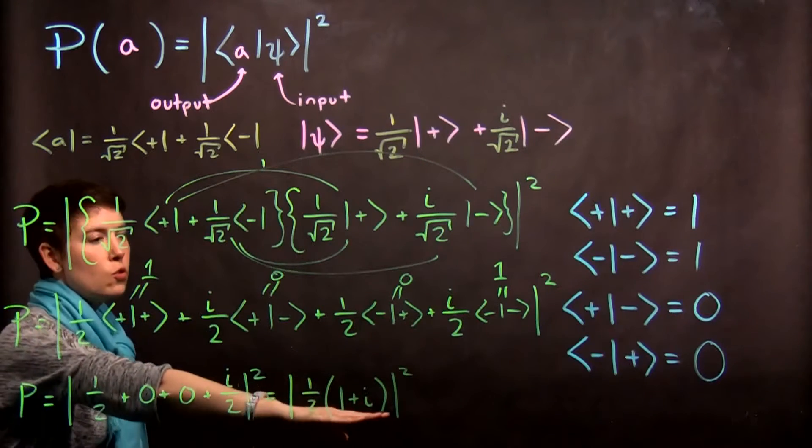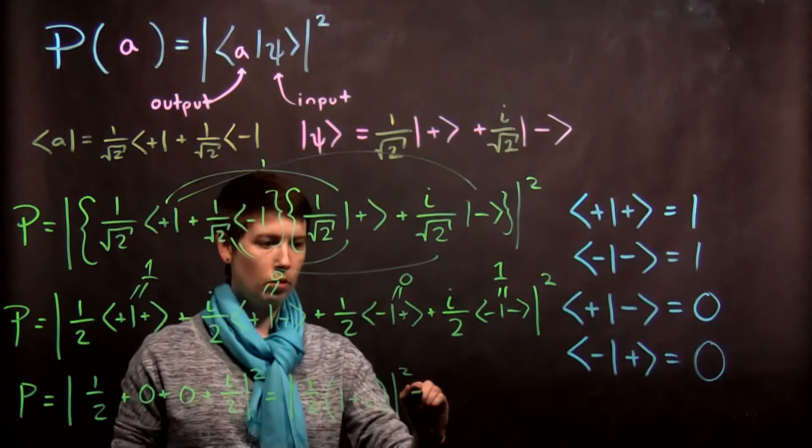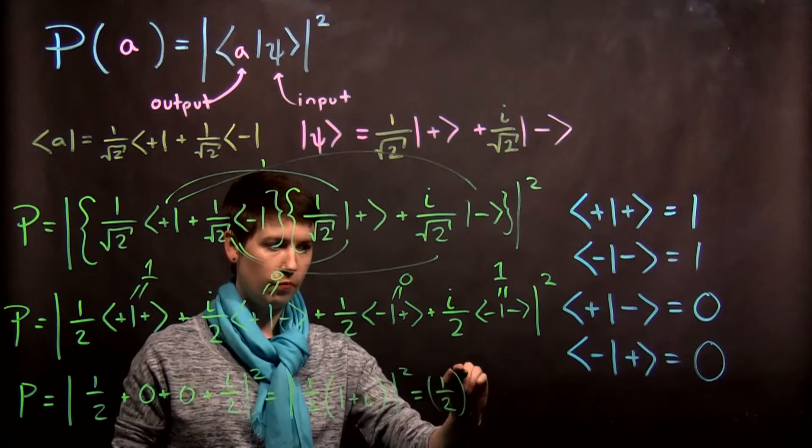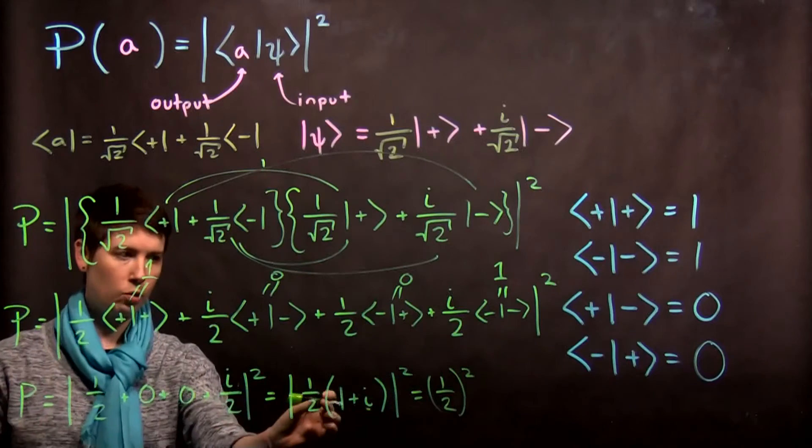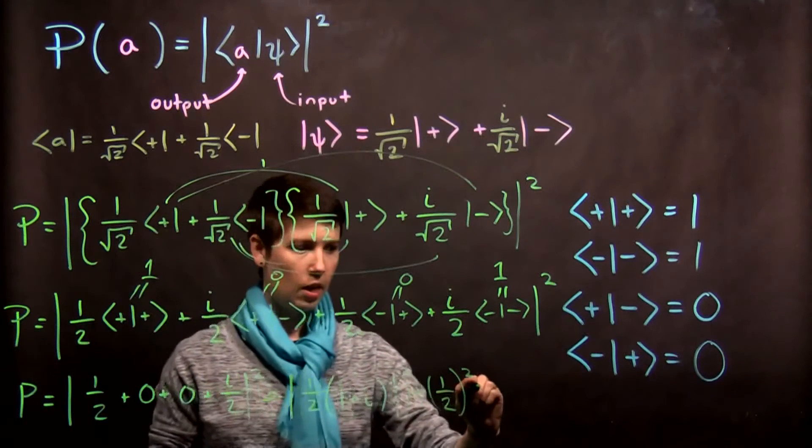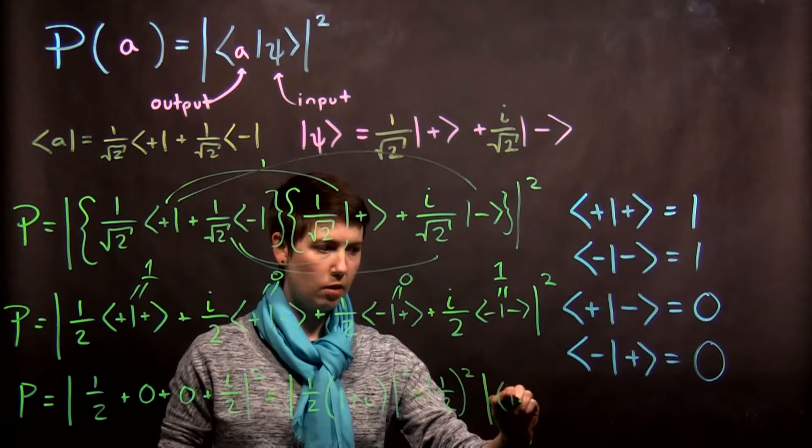So what we can do is now pull out that one half and square it. So I've kind of pulled this one half out and left it squared. And now I'm left with one plus i squared.